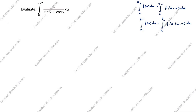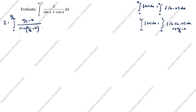Let I equal the integral from 0 to π/2 of x divided by (sin x + cos x) dx. Here a is 0 and b is π/2, so we replace x with (π/2 - x). This gives (π/2 - x) divided by (sin(π/2 - x) + cos(π/2 - x)) dx. We label this as the first equation.